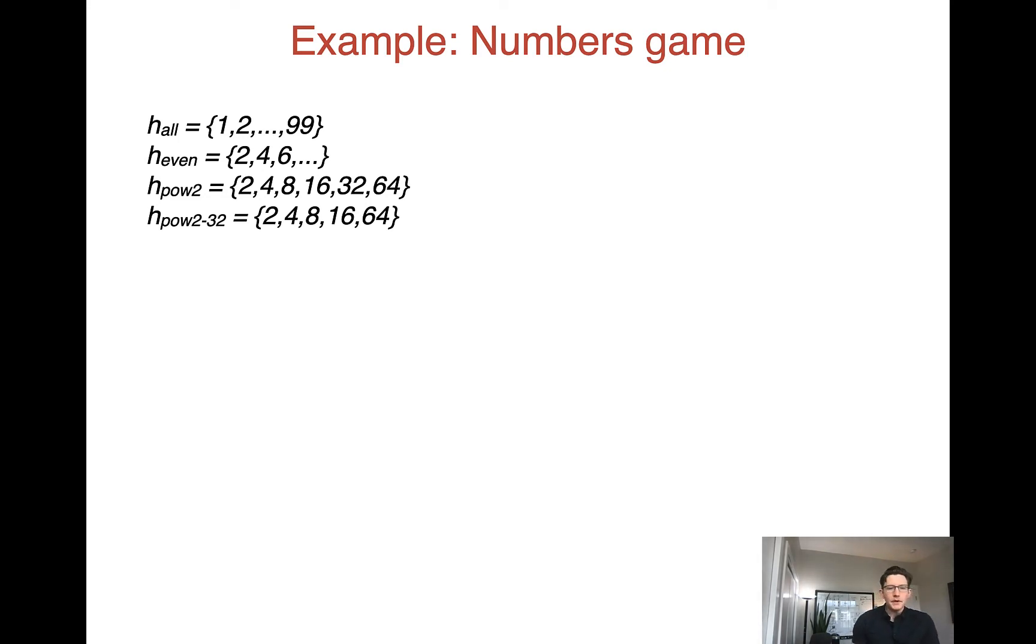We're going to look in a bit of a simpler case. We're going to imagine we have these four hypotheses: all, which is all the numbers from 1 to 99 are possible, and each one has a 1 in 100 probability, just the even numbers, just the powers of 2, and just the powers of 2 apart from 32. So note that this is the same as this one, just there's no 32.